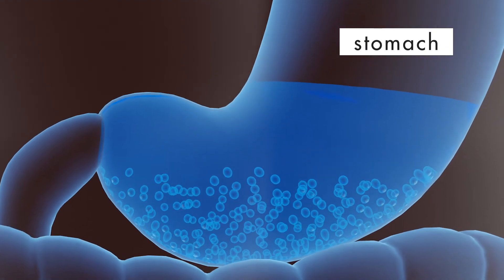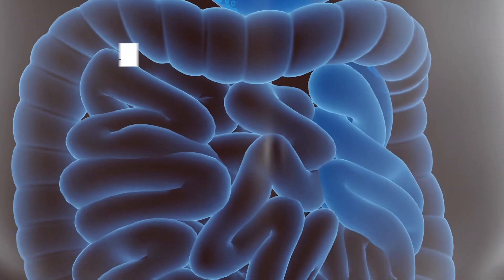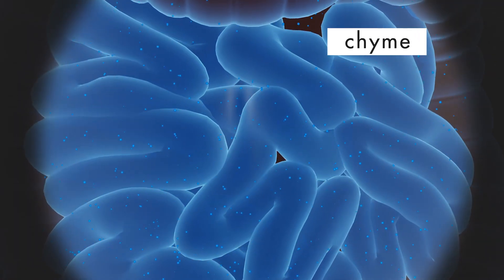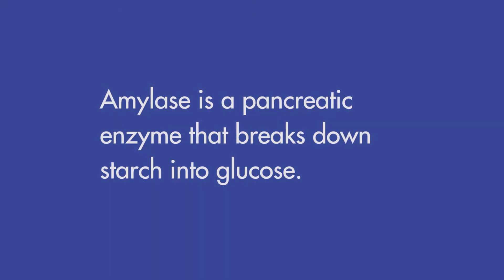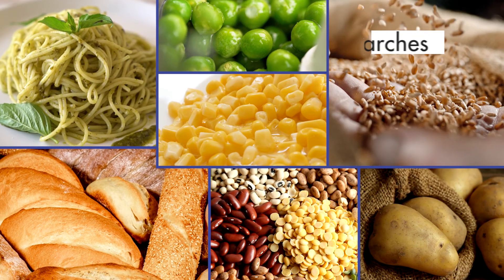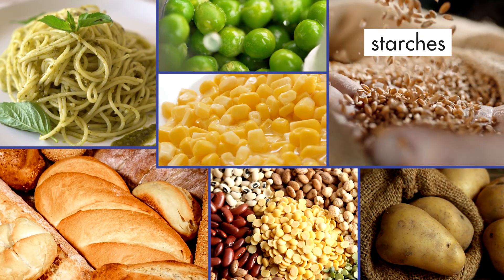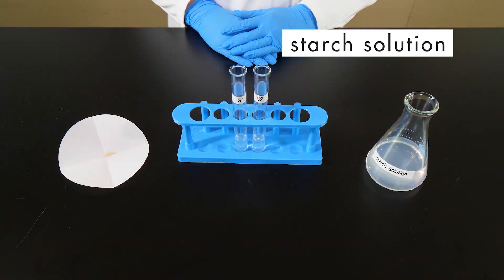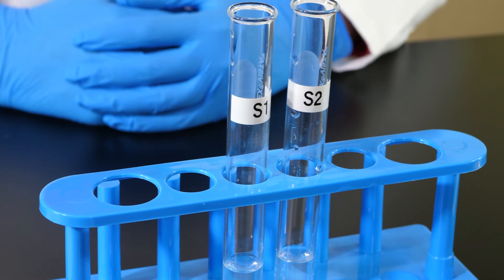Partially digested food that leaves the stomach and enters the small intestine is called chyme. In the small intestine, chyme is mixed with digestive enzymes secreted from the pancreas. Amylase is a pancreatic enzyme that breaks down starch into glucose. Glucose is a simple carbohydrate that can be assimilated by the cells of the body. In this experiment, we will examine the chemical digestion of starch by amylase.